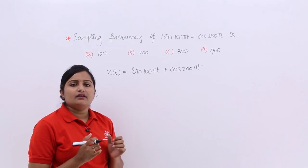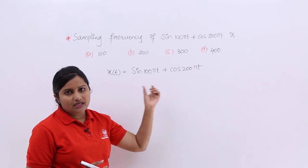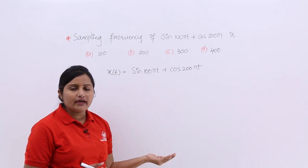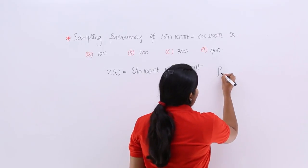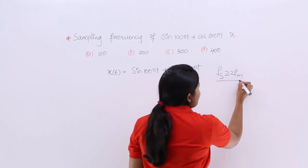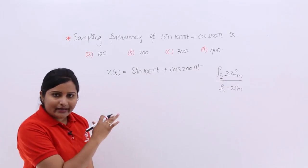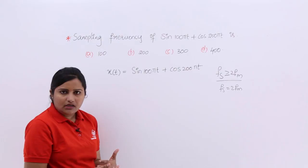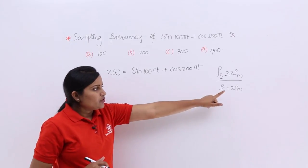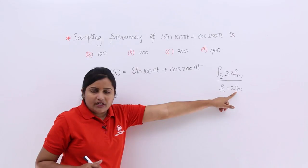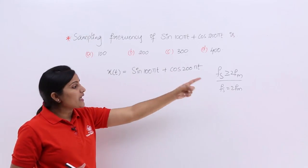Here, how we can find the message frequency component: we need to find out the individual frequency components, and the maximum of those will work as the frequency component of the message signal. Generally, what they are asking is sampling frequency. You know that sampling frequency must be greater than or equal to 2fm. The minimum sampling frequency is fs = 2fm. To get fs, you need fm, but you are not given any fm value here — they just gave the signal directly. From this signal, you need to calculate fm.